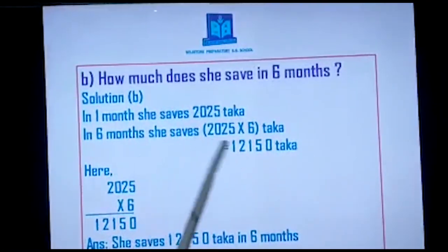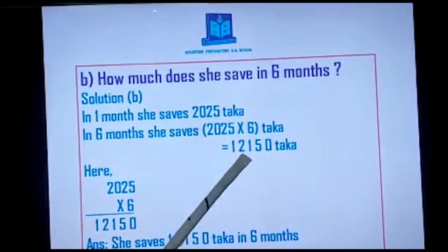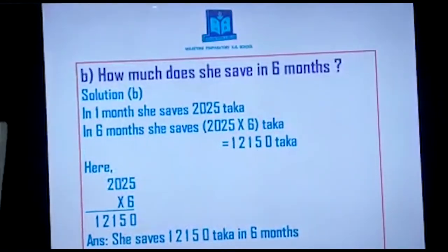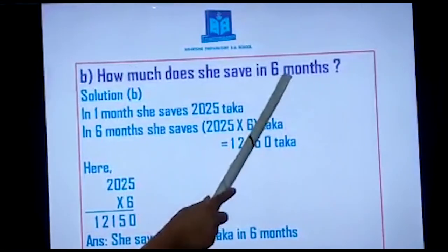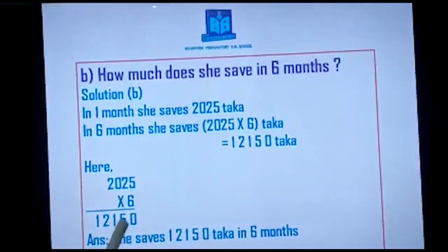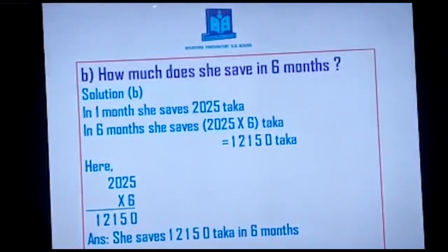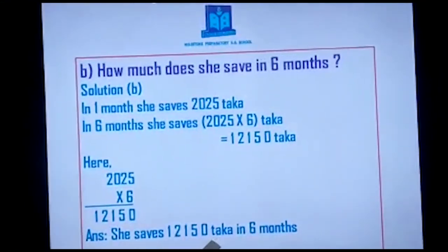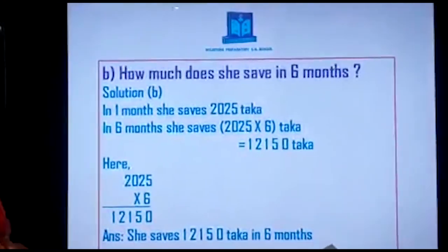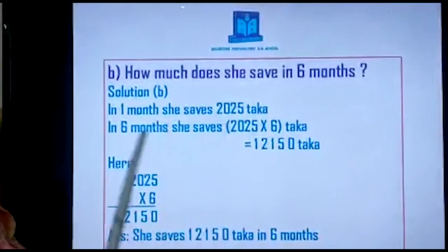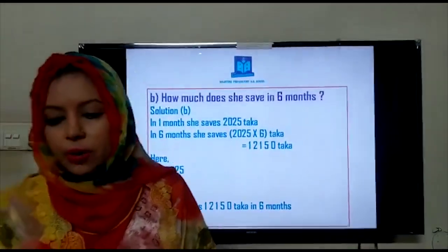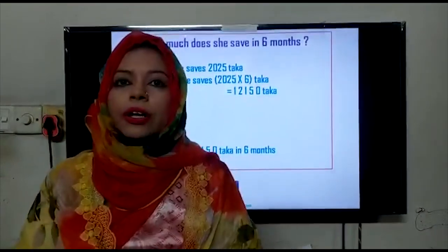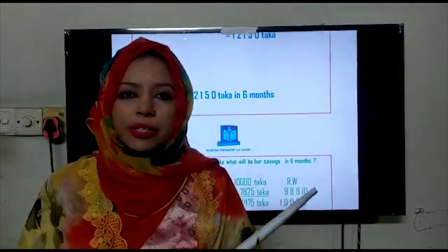She saves twelve thousand, one hundred fifty Taka in six months. At last I have written the answer: she saves twelve thousand, one hundred fifty Taka in six months. Now I am showing you the last part — question number C.